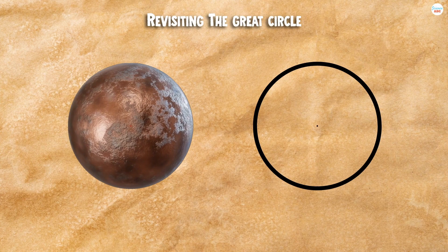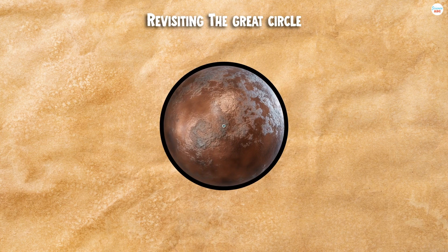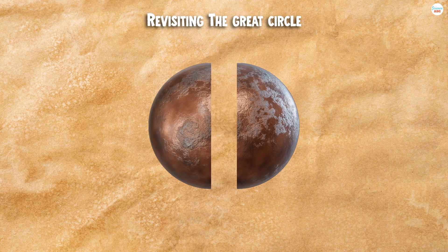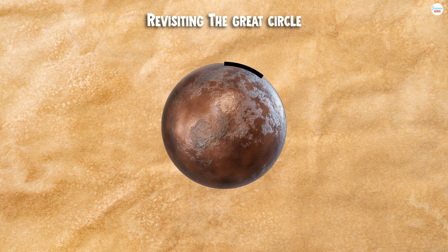In purely mathematical terms, a great circle is any circle drawn on a sphere whose center coincides with the center of the sphere, thus dividing the sphere into two equal halves. In simpler terms, a great circle is the largest circle that can be carved out of a sphere.